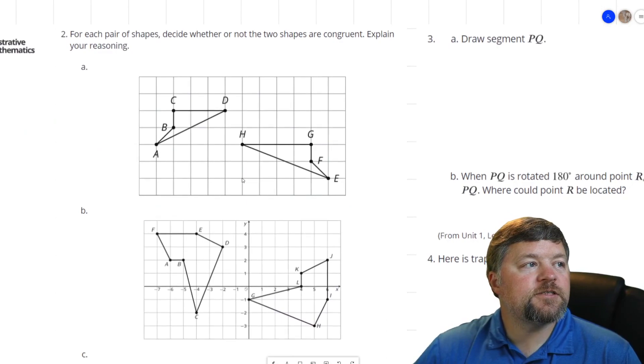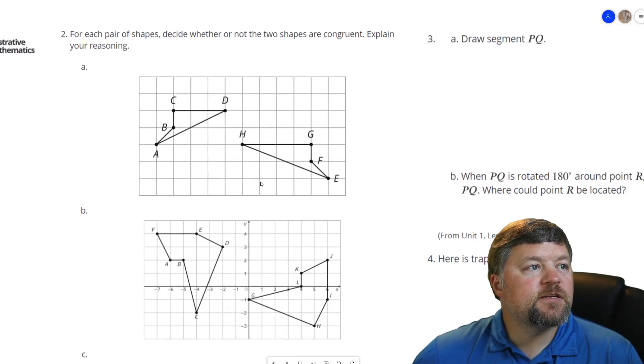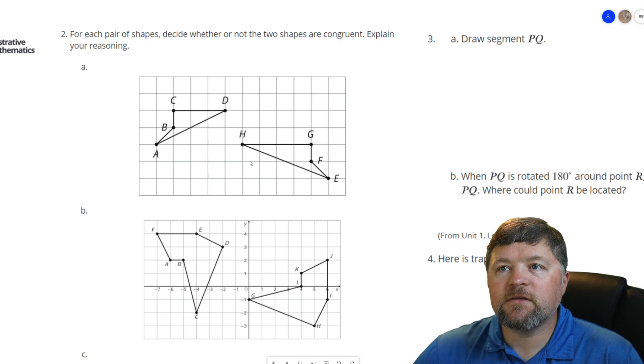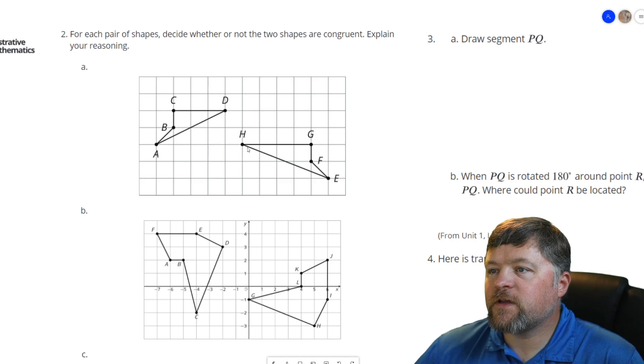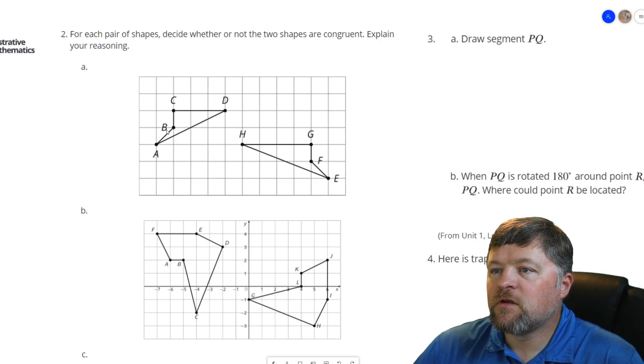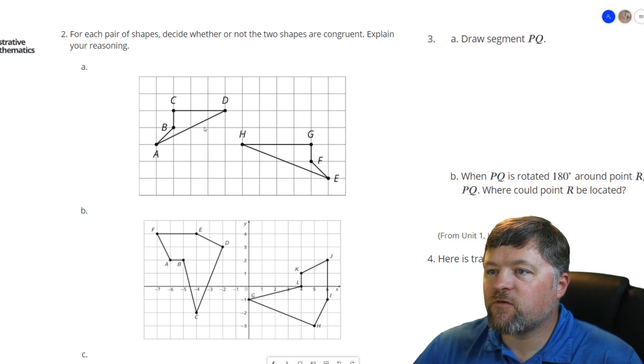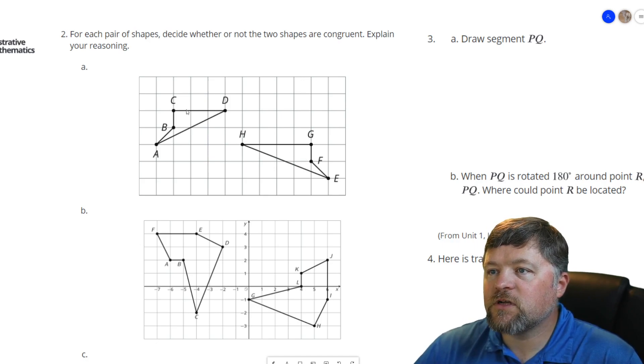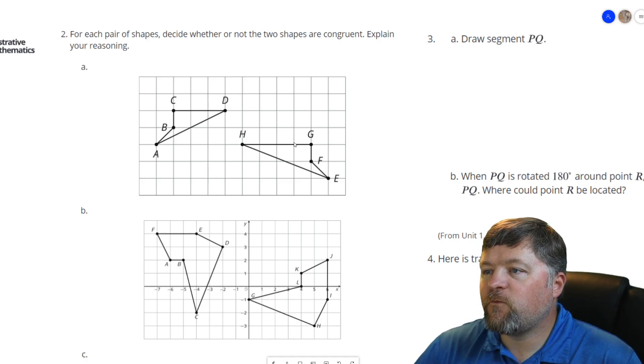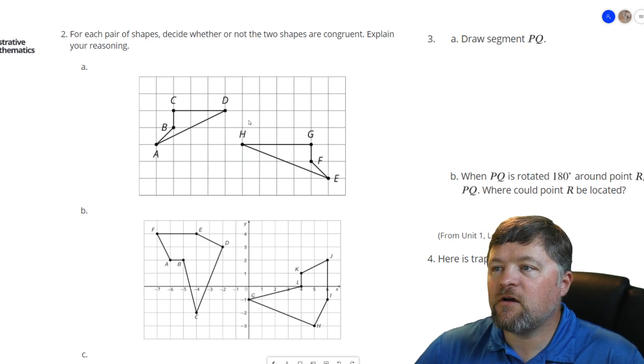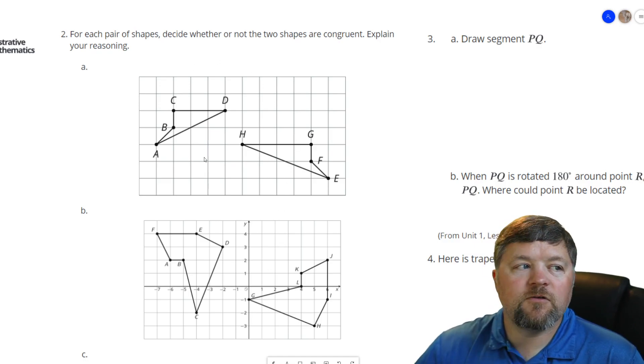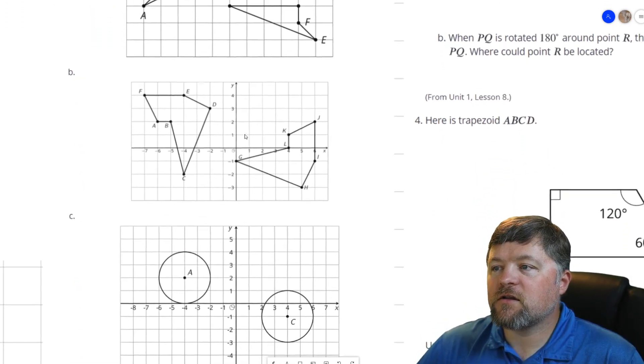Okay, our next problem here says for each pair of shapes, decide whether or not the two shapes are congruent. Explain your reasoning. Are these two figures congruent? Well, it looks kind of like a reflection to go from one to the other. However, CD is 3 units long and HG is 4 units long. Can they be congruent to each other if they have different side lengths? No. So A, those are not congruent.